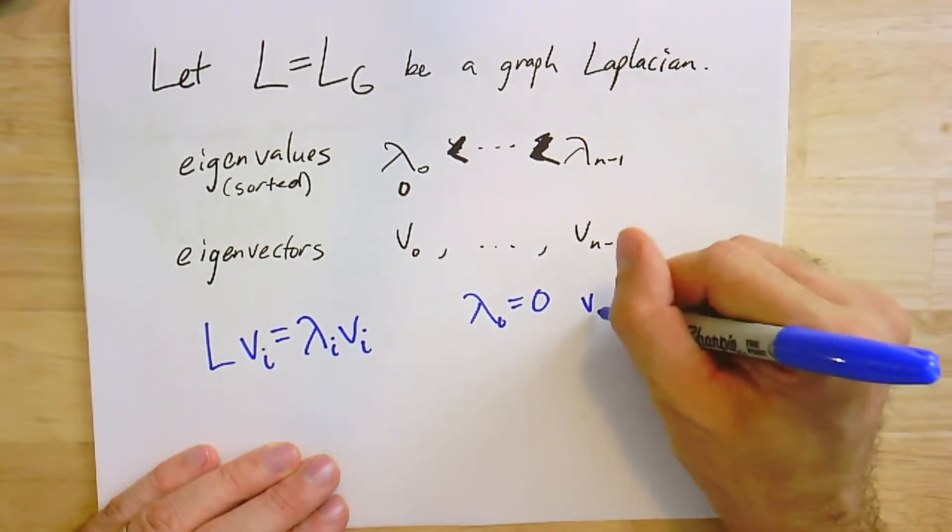Now, λ₀, I said, was going to be just equal to zero. And we know at least one vector that gets scaled by zero, which is that all-ones vector. So if I just take a Laplacian times all ones, I'm always going to get zero. So that becomes an eigenvector with eigenvalue zero.